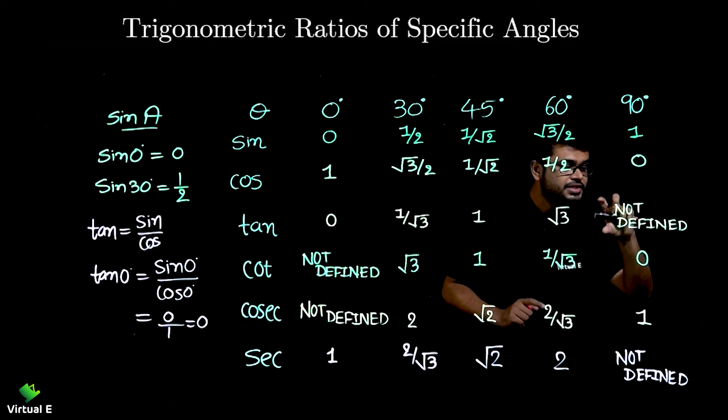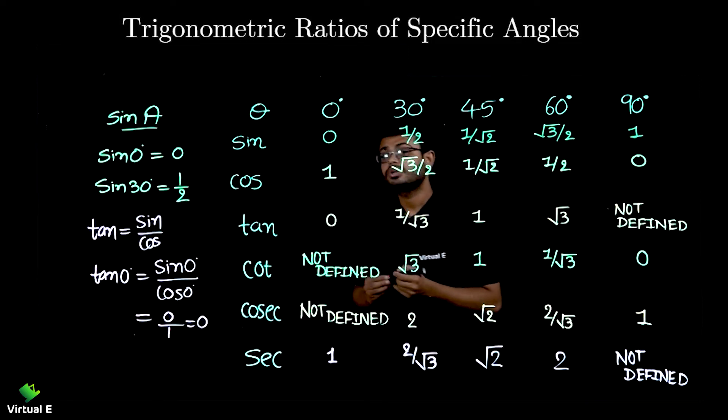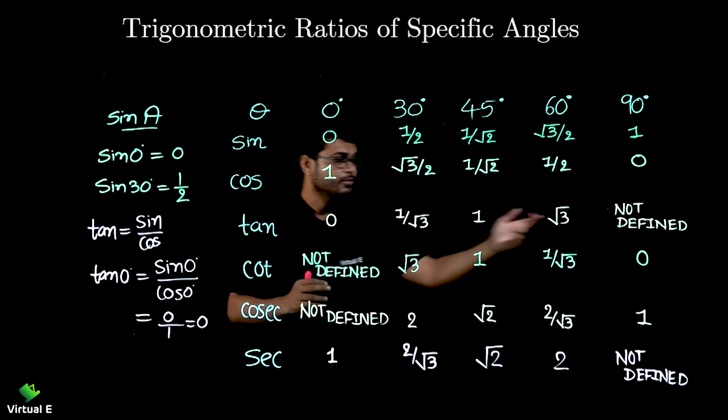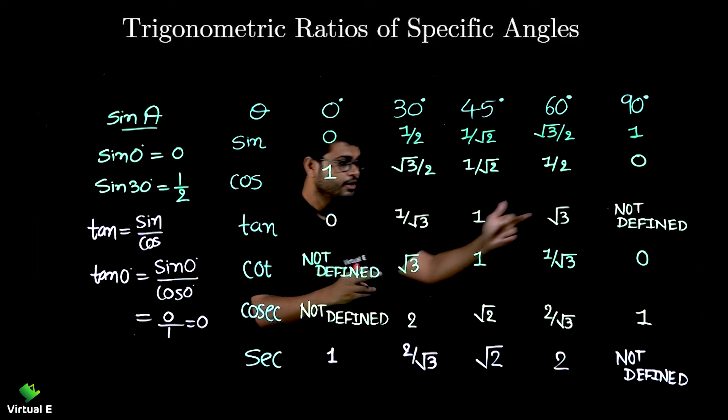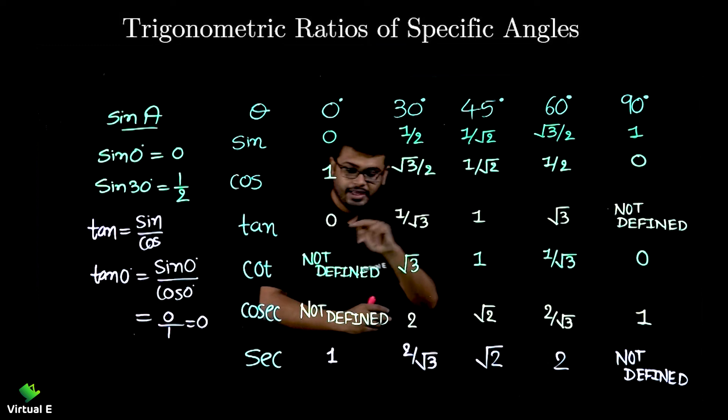To write the value of cot, again we are going to do it in the reverse way. Not defined for 0, here root 3, here 1 as it is, 1 by root 3 there, and 0 there. Simple.